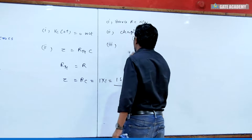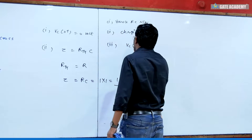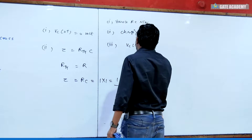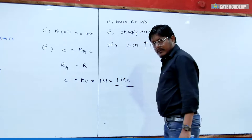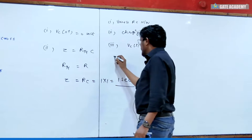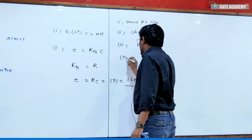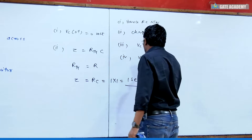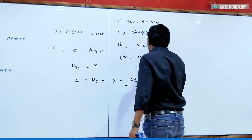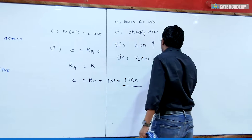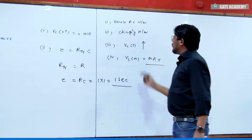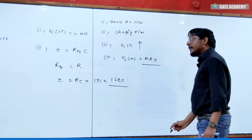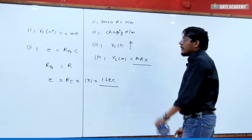The capacitor voltage will increase as a function of time. That's how it happens. In the steady state, the capacitor voltage is at its maximum. The Vc(∞) value is maximum. When the source is a DC source, what is the value at t = ∞?